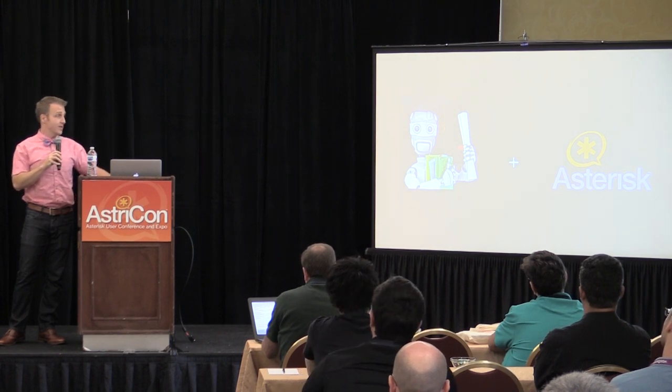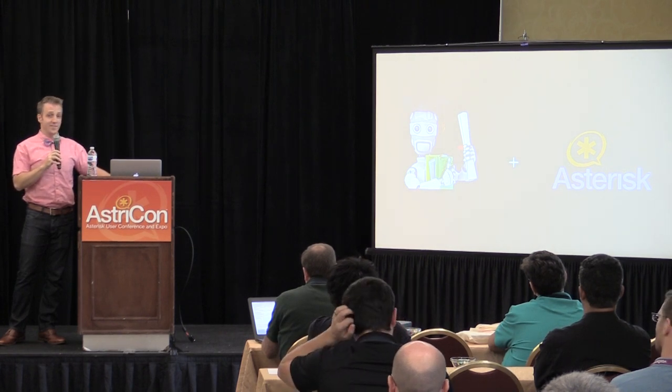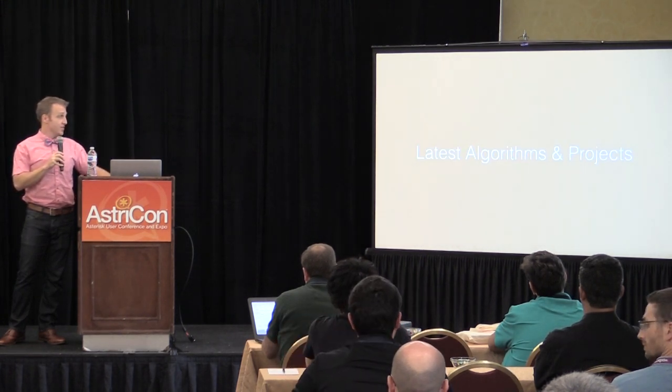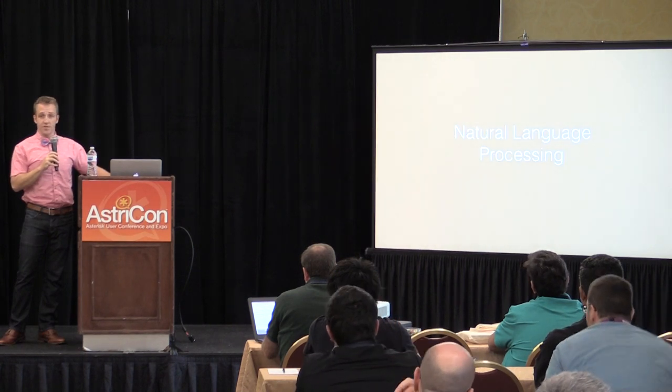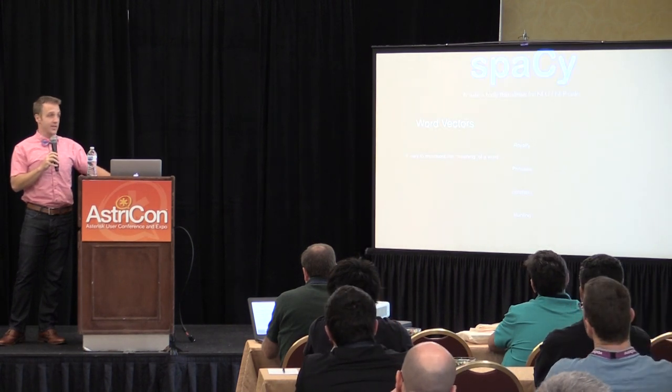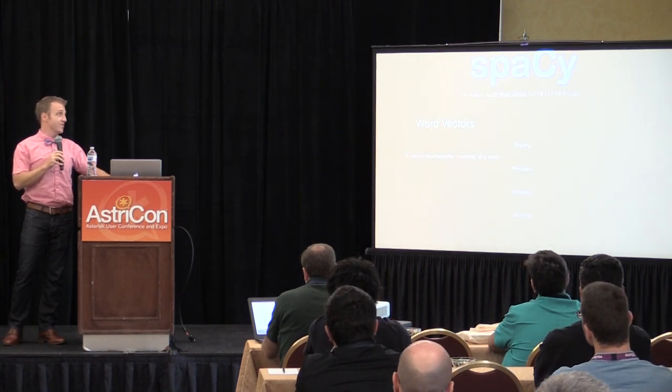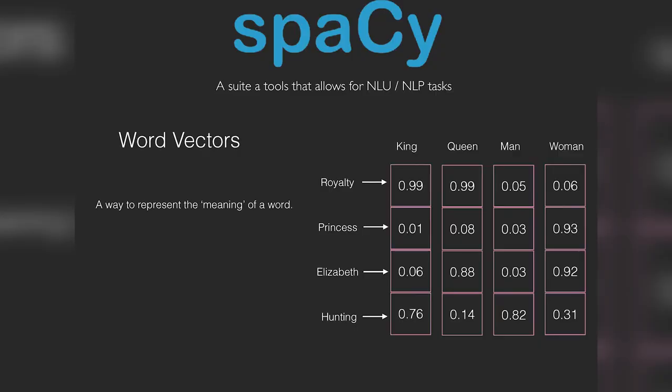So how does this interface with Asterisk? We'll start with SpaCy. SpaCy is a suite of tools that allow for natural language understanding and natural language processing. The way they do that involves something interesting called word vectors.